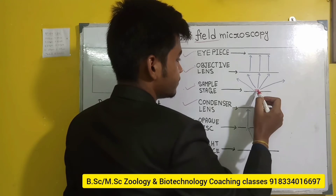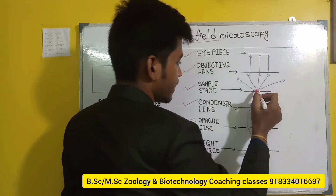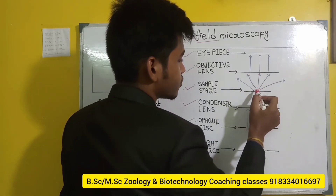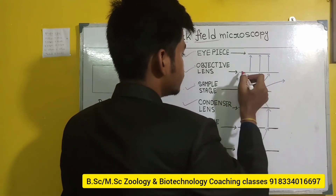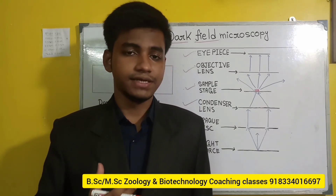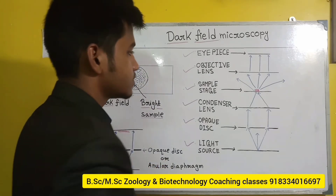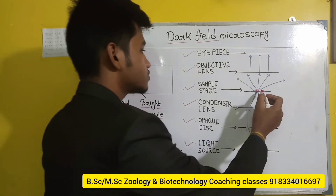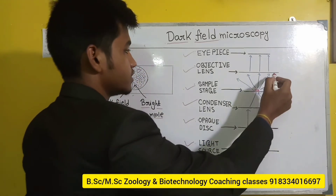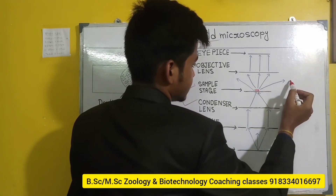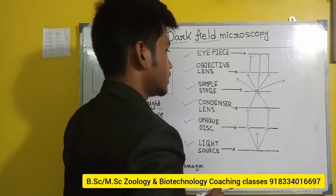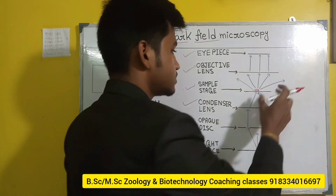Two types of reflection occur: diffracted and non-diffracted. Those light rays which emerge from the sample and are captured by the objective lens are called diffracted light rays, or diffraction. Those light rays coming from the sample that are not captured by the objective lens — going off to the sides — are called non-diffracted light rays.